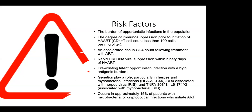The genetic factors that play a role include HLA-B44 associated with herpes virus in IRIS, and TNF-alpha 308*1 and IL-6 -174G associated with mycobacterial IRIS. It occurs in approximately 15% of patients with mycobacterial or cryptococcal infection who initiate ARVs.